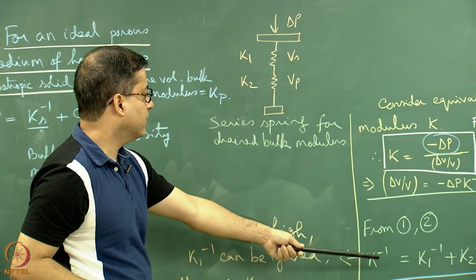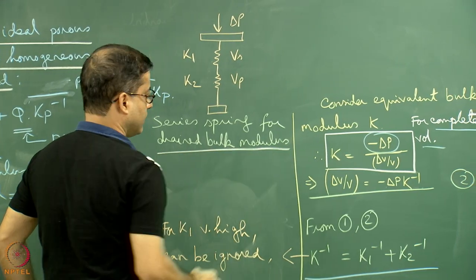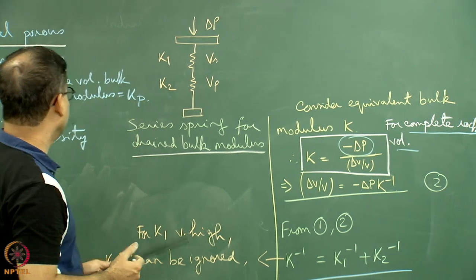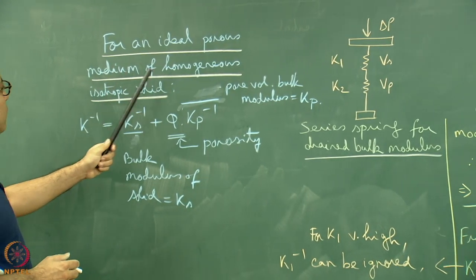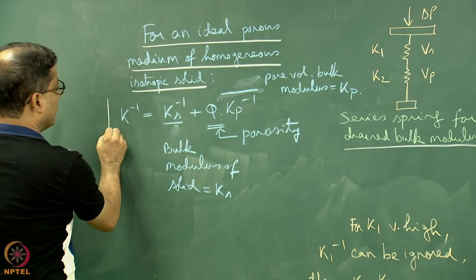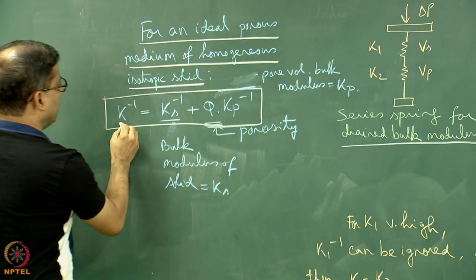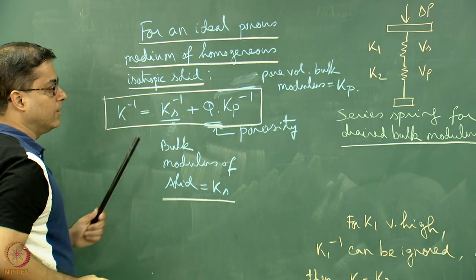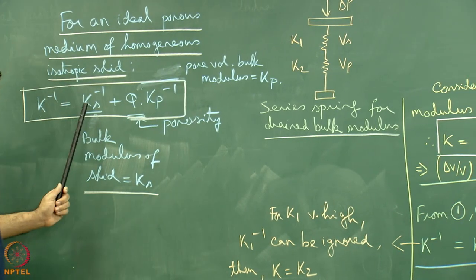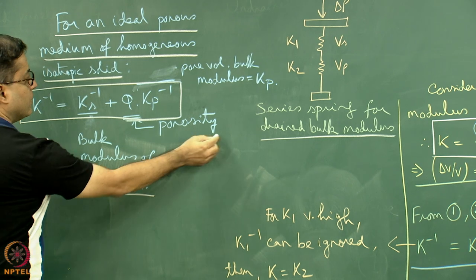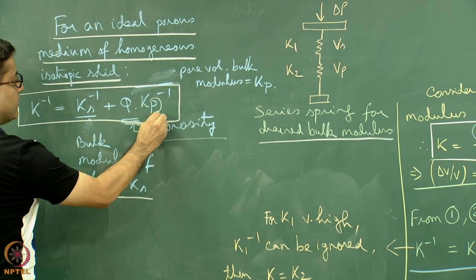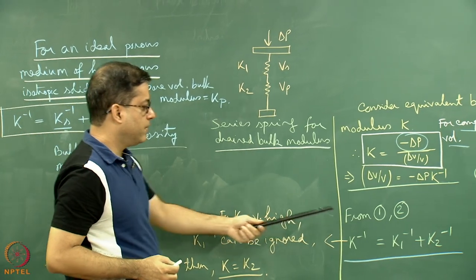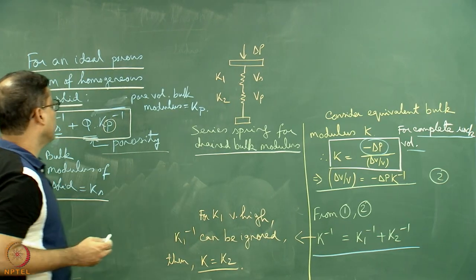This derivation applies to the drained bulk modulus because no fluid bulk modulus value was introduced — meaning fluid is absent. For an ideal porous medium of homogeneous isotropic solid, the relation is more accurately written as K inverse equals Ks inverse plus phi times Kp inverse, where Ks is the bulk modulus of the solid, phi is the porosity, and Kp is the bulk modulus of the pore space (equivalent to K2). The notation may vary from book to book.